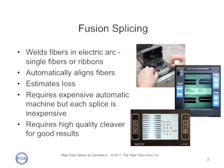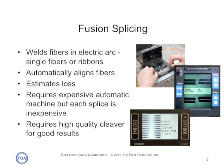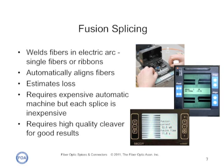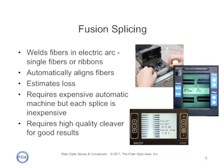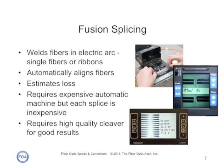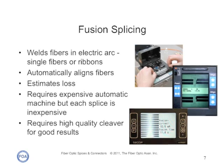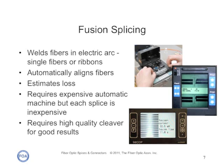Fusion splices are done with an automatic machine that welds the fiber in an electric arc. It can automatically align the fibers and even estimate the loss once the splice is made. The machines can be expensive, but each splice is inexpensive. Each splicer, however, requires a high-quality cleaver, often quite expensive, for best results.